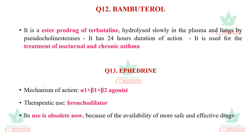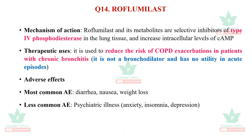Question twelve is bambuterol. It is an ester prodrug of terbutaline, hydrolyzed slowly in the plasma and lungs by pseudocholinesterases, and is used for treatment of nocturnal and chronic asthma. Question thirteen is ephedrine — an agonist of alpha-1, beta-1, and beta-2 receptors used as a bronchodilator, but its use is now obsolete due to availability of safer and more effective drugs. Question fourteen is roflumilast — roflumilast and its metabolites are selective inhibitors of type 4 phosphodiesterase present in lung tissue, increasing intracellular cyclic AMP levels. It is used to reduce the risk of COPD exacerbations in patients with chronic bronchitis; it is not a bronchodilator. Adverse effects include diarrhea, nausea, weight loss, and less commonly, psychiatric illness.